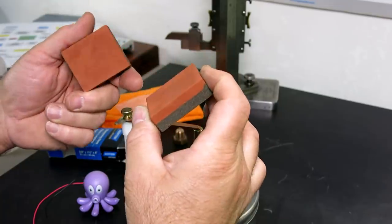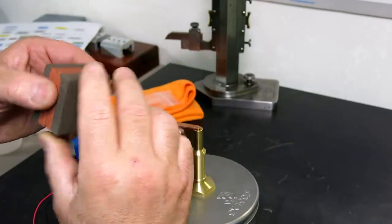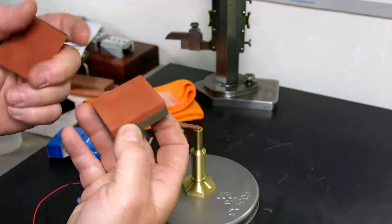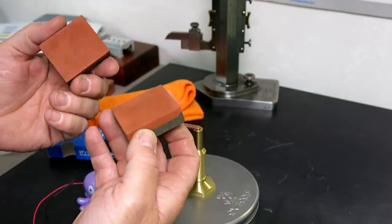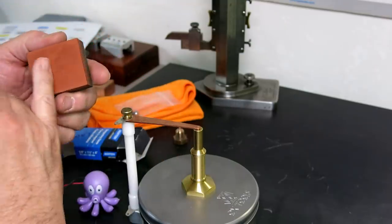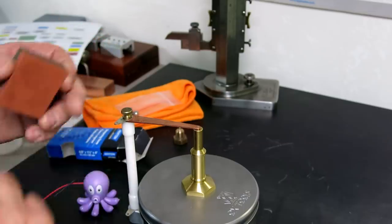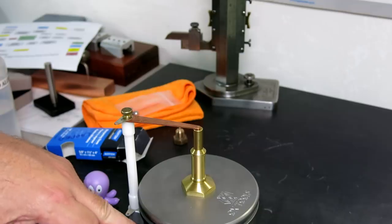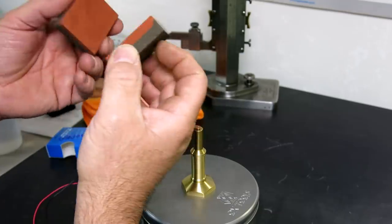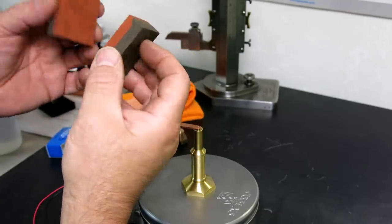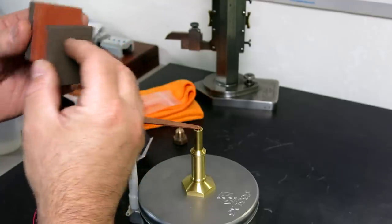So just real briefly about these stones here. So this is not a sharpening stone and shouldn't be treated as such. These have been lapped to basically optical flatness, very similar to the flatness of these parts here. So 50 to 50 nanometers, something like that, kind of wavelengths of light stuff.